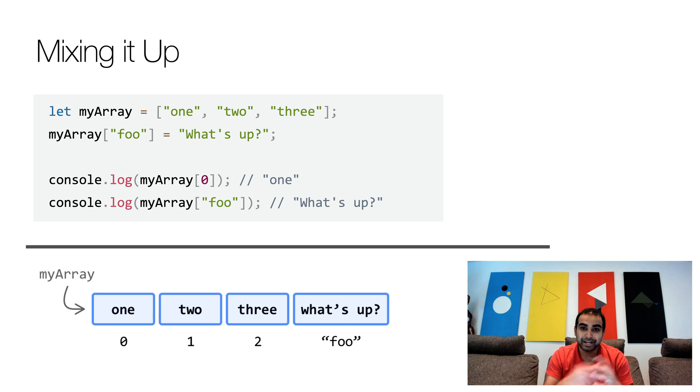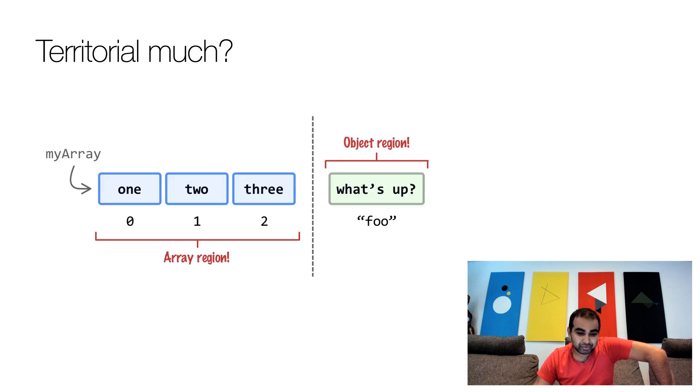And if you were to look at my array visually, you'll see that one, two, and three are appropriately represented by index positions, zero, one, and two. And then the value of what's up is represented by the key value of foo, which is a string. And if you were to break it up a little bit, you'll see that our object my array is actually not fully an array anymore.